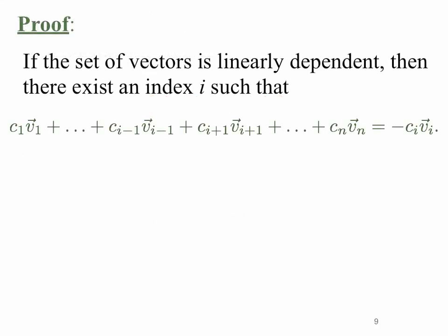So we can actually show that. So as a proof, if the set of vectors is linearly dependent, then there exists an index I such that the CIVI is a linear combination of the other. So as long as CIVI is not equal to zero, you see that I could take all of the other vectors and combine them in some sort of way to get the I-th vector. So that's what it would mean for that vector VI to be dependent.